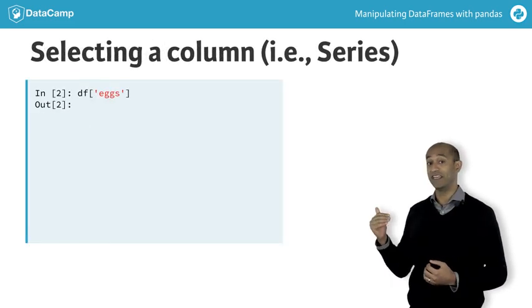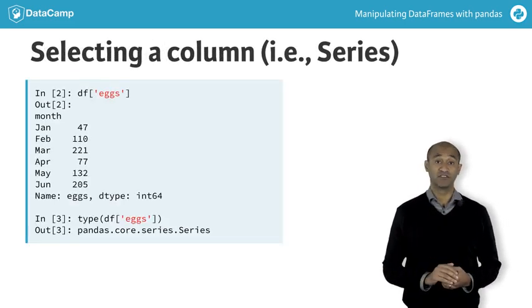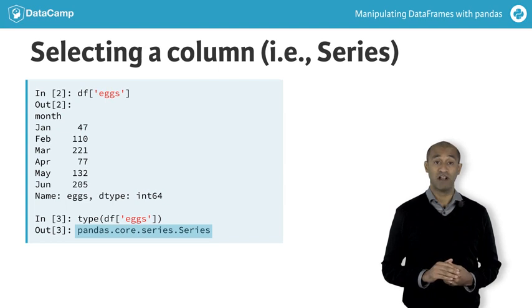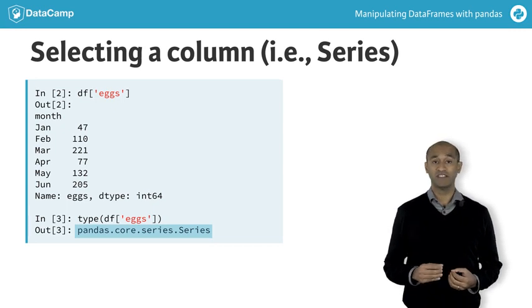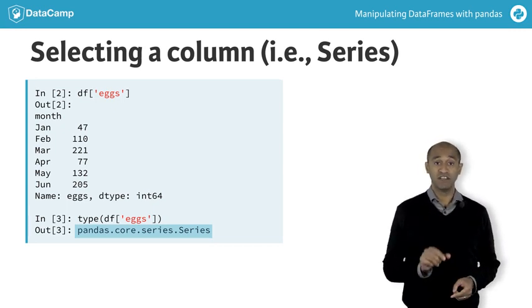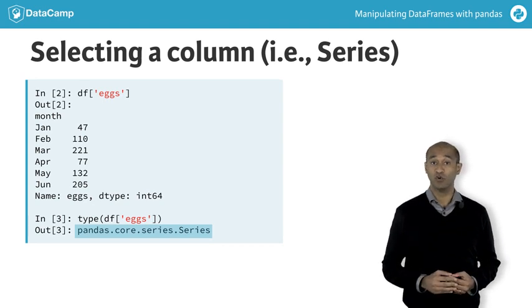The basic indexing here picks a column by default. The result returned is actually a pandas series. A series is a one-dimensional array with a labeled index, like a hybrid between a numpy array and a dictionary. Another way to think of a dataframe is a labeled two-dimensional array with series for columns sharing common row labels.